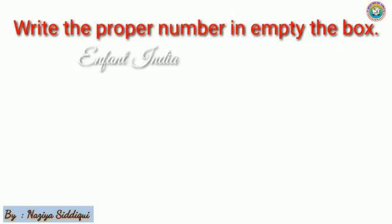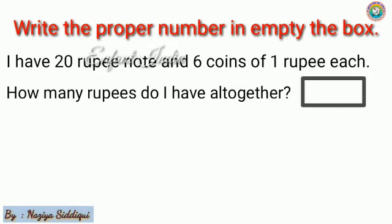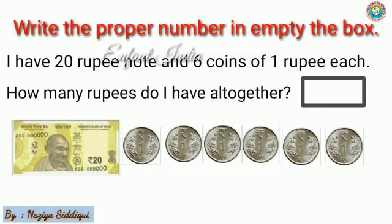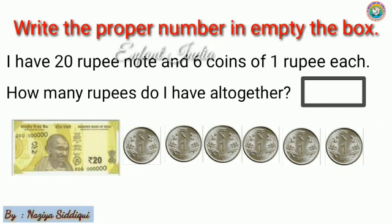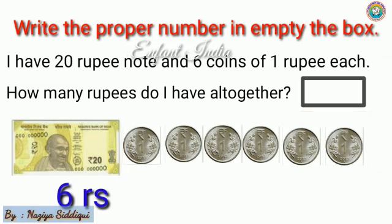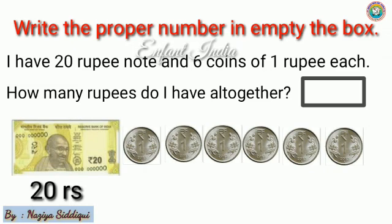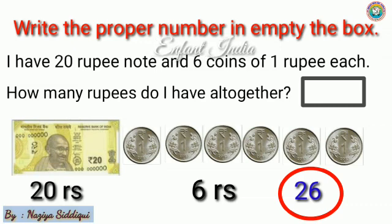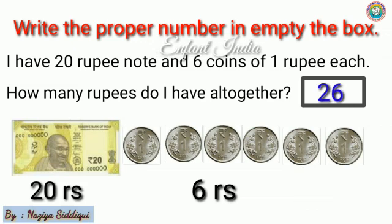Next example: write the proper number in the empty box. First one — I have a 20 rupee note and 6 coins of 1 rupee each. How many rupees do I have altogether? 1 rupee coin × 6 means 6 rupees in coins. So 20 rupees plus 6 rupees — in all I have 26 rupees. Write 26 in the box.